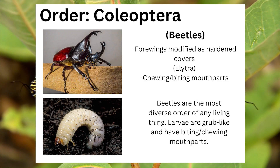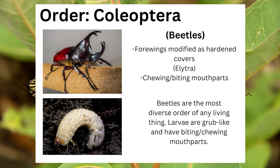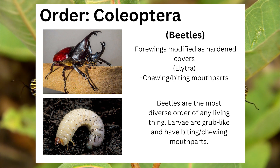Insects in the order Coleoptera, the beetles, can be identified by their elytra, which are hardened forewings modified to protect the beetle, and their chewing biting mouthparts. Other than these two features, beetles are incredibly diverse with plenty of modifications. In fact, Coleoptera is the most diverse order of any living thing, with over 350,000 species described. To put this into perspective, if you were to pick a species of animal out of all animals at random from a hat, there's a roughly 25% chance it'll be a beetle.